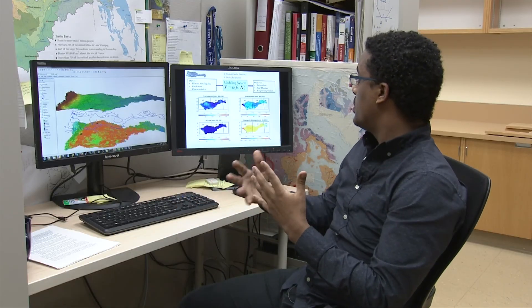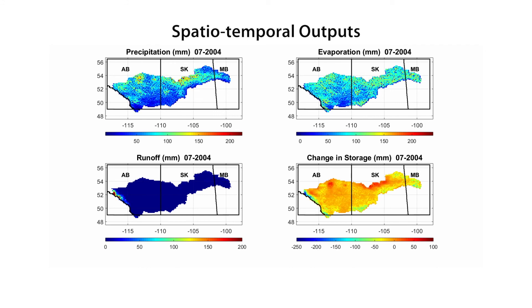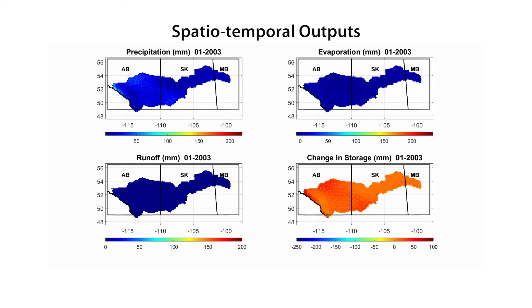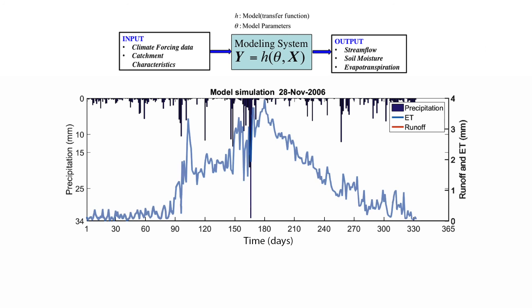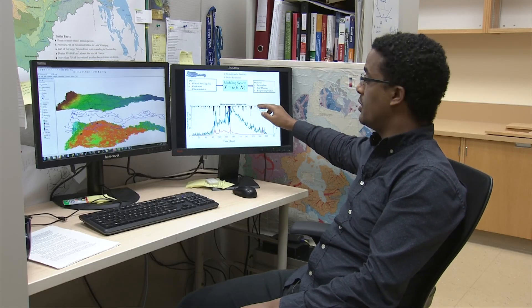After supplying all these necessary inputs, the model will produce spatial-temporal outputs. Here you can see the evapotranspiration output of the model over the Saskatchewan River Basin, and also the runoff and changing storage. One of the final temporal products would be like this — we have evaporation variations, runoff, and precipitation on the top within a given year.